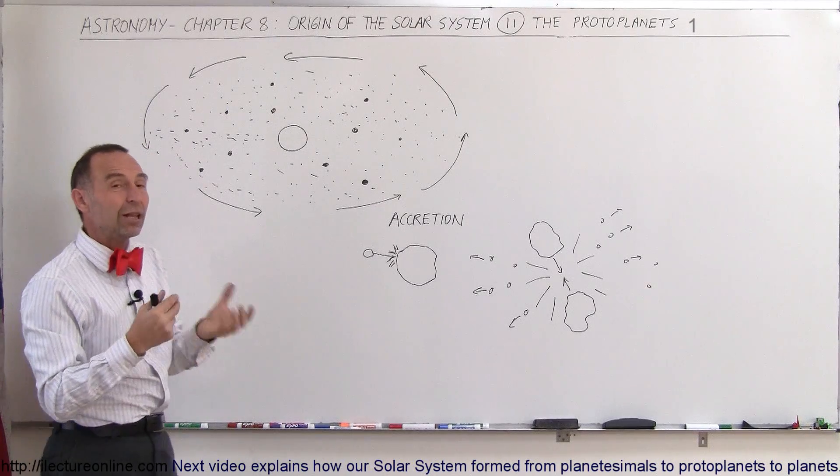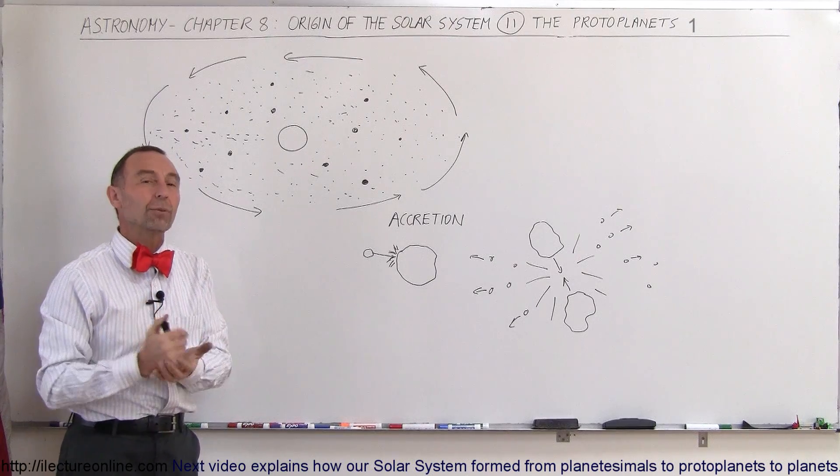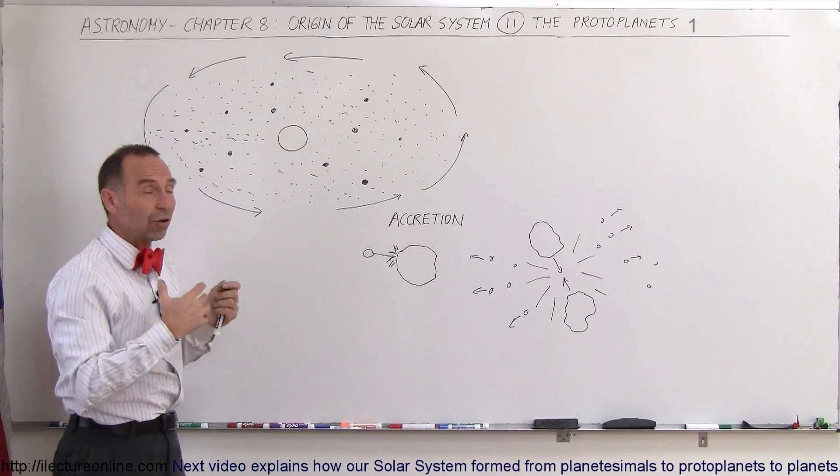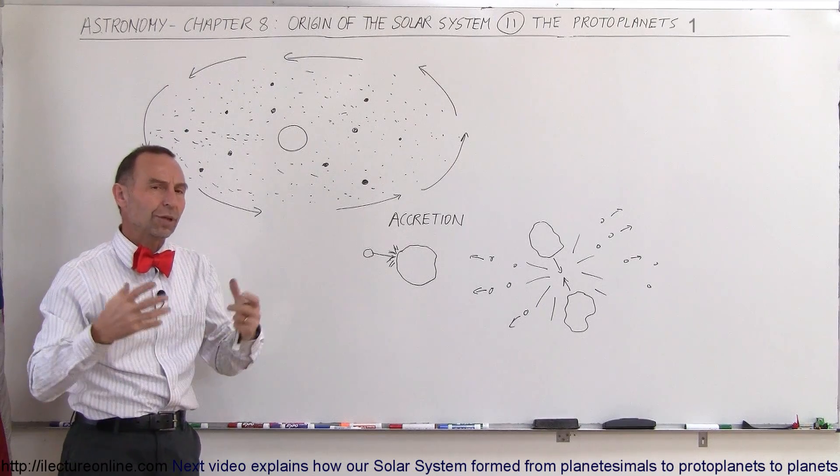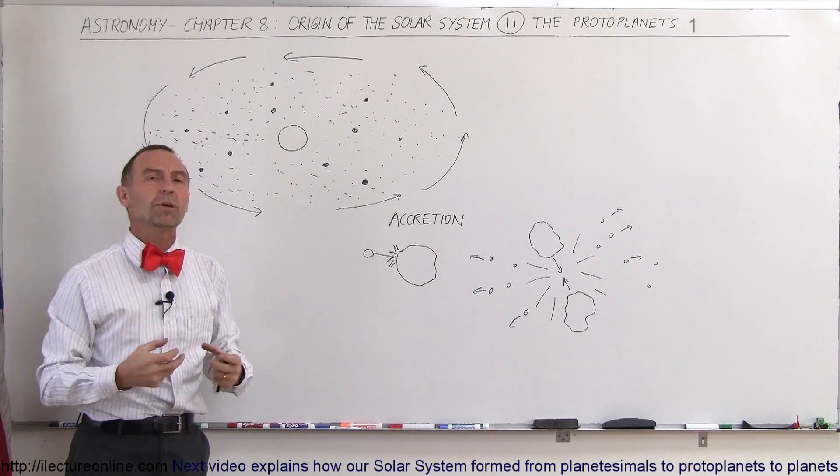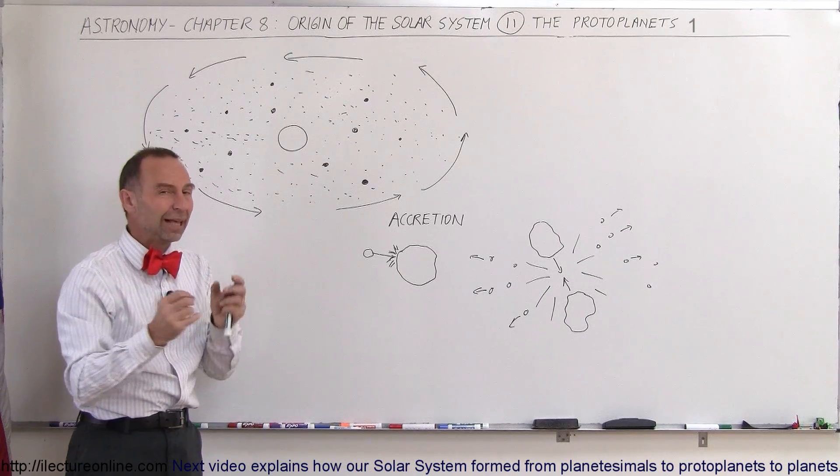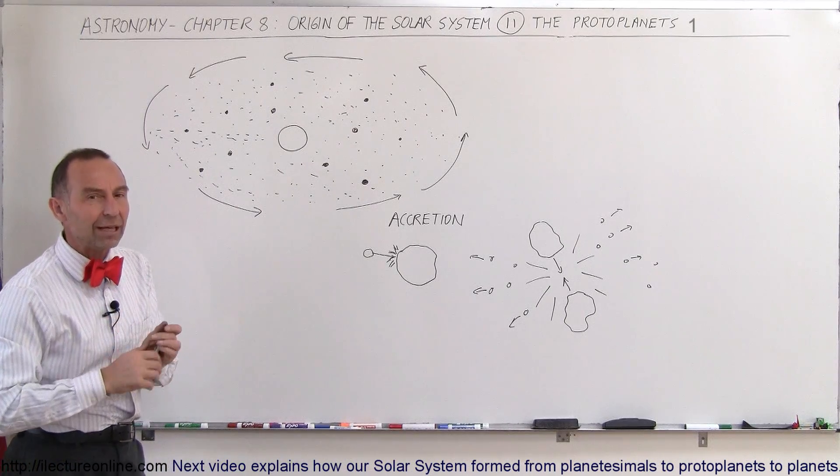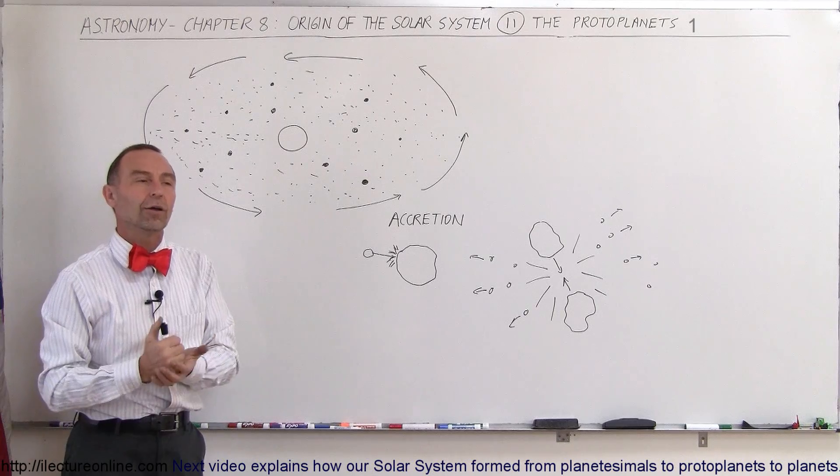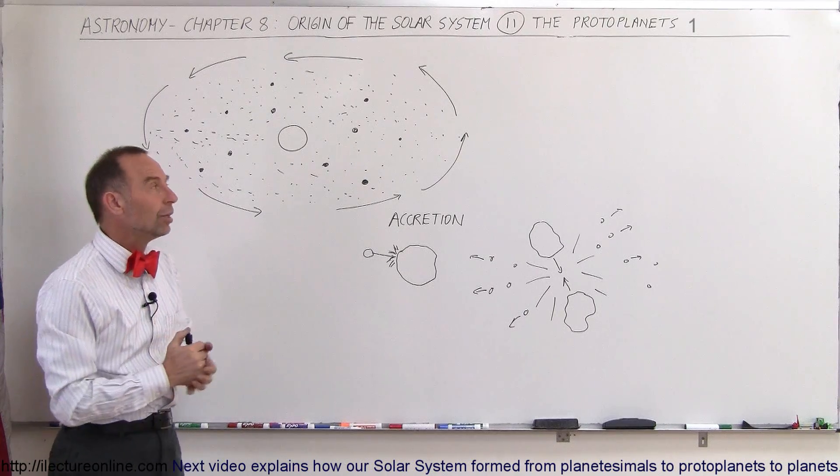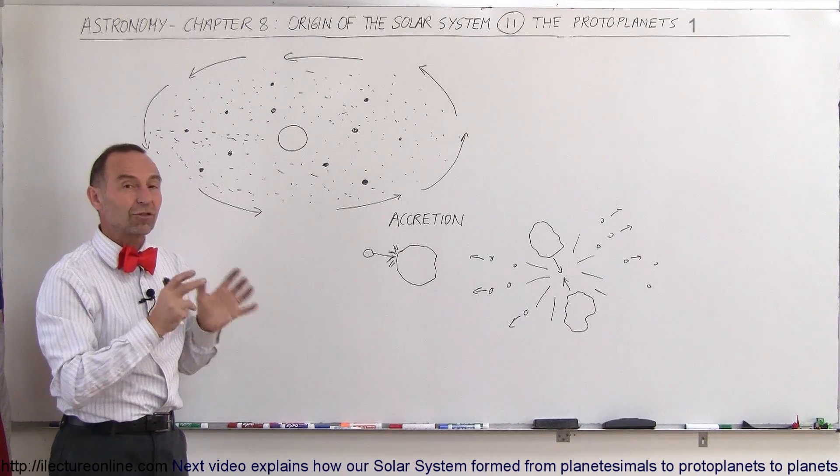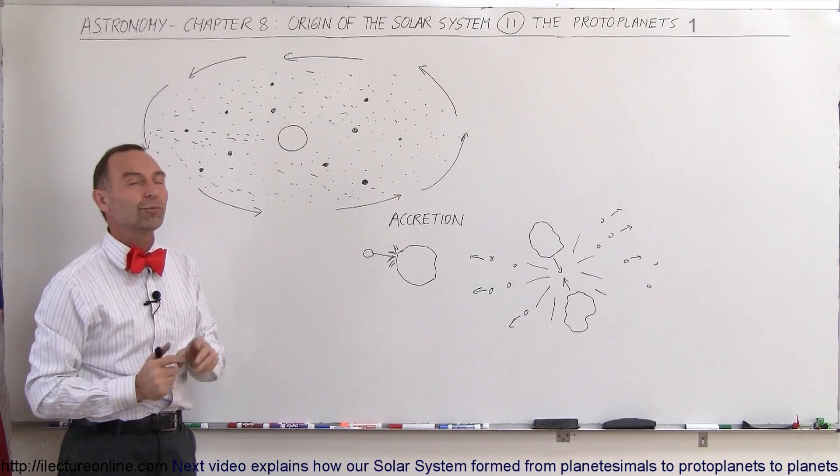So eventually we would end up with something that we can actually model. And what we've tried to do is we then started a model, for example, assuming that we would end up with maybe a hundred of these large pieces and then see what would happen, taking into account the laws of gravity and the gravitational equation that we got from Newton. And then when we put things together, slowly we can see how our solar system would then eventually emerge.